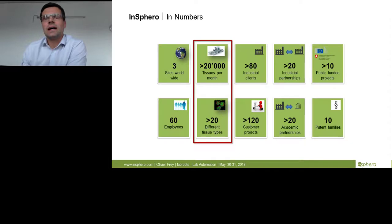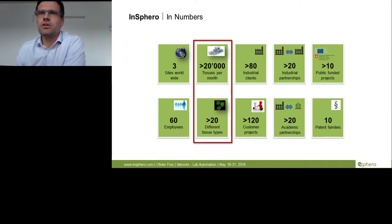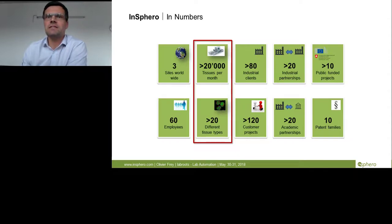I would like to start by giving you a brief overview of Insvero and what we're doing. We are specialized in producing and engineering 3D microtissues — over 20,000 tissues per month of a large variety of different cell types. We do this for industrial clients so that they can test their substances on a 3D physiological model, in partnerships with publicly funded projects and academic partnerships. We have a large customer base and around 50 employees at three different sites worldwide.